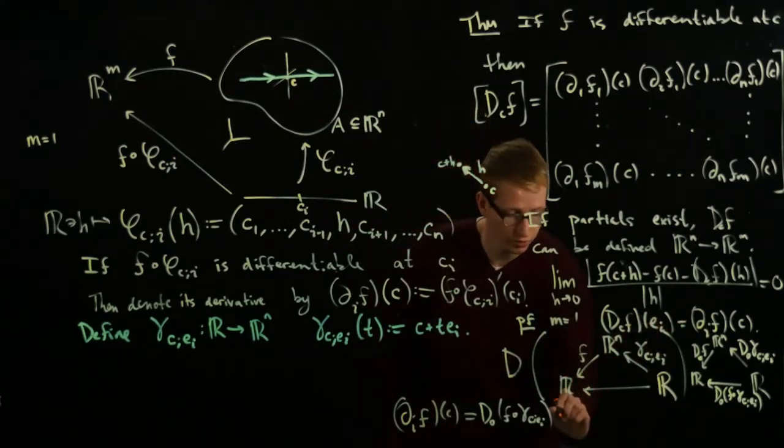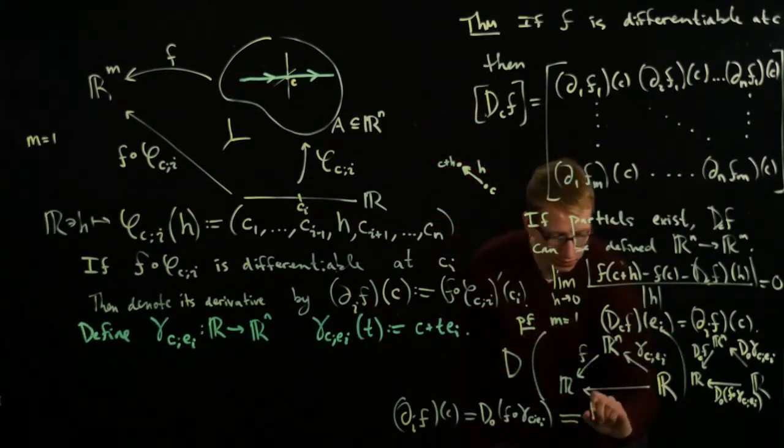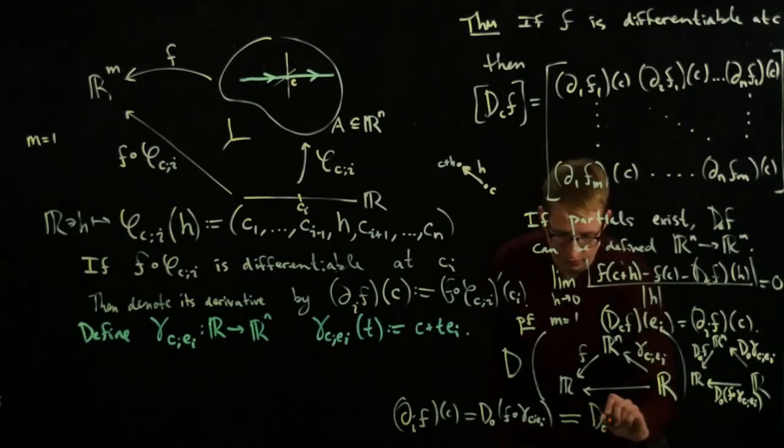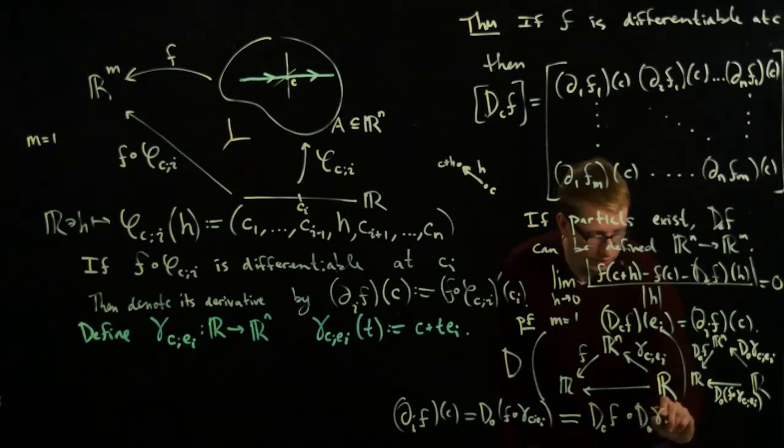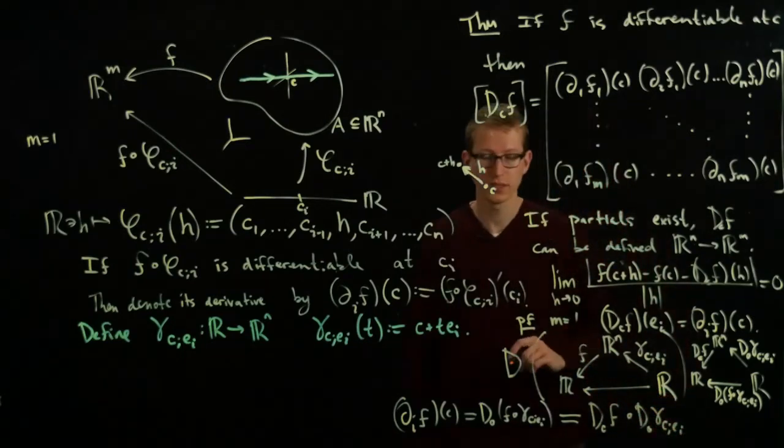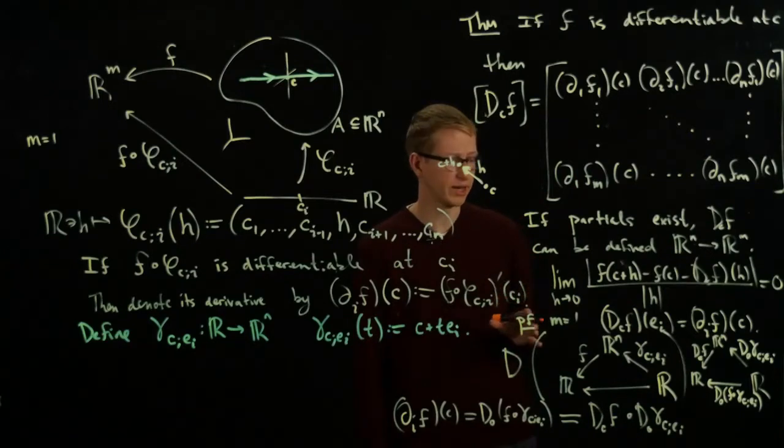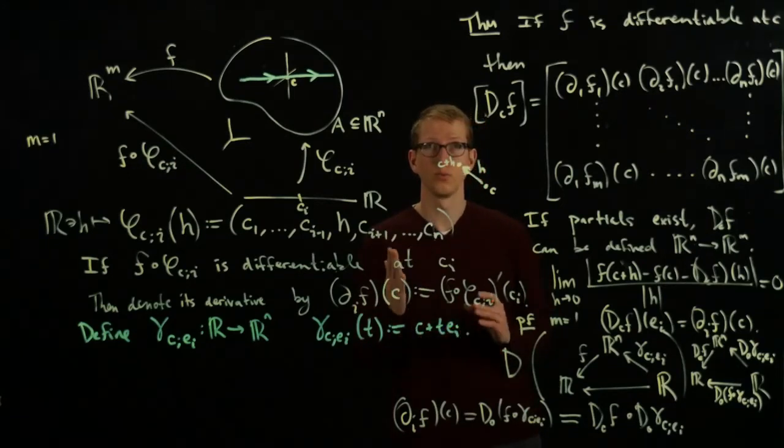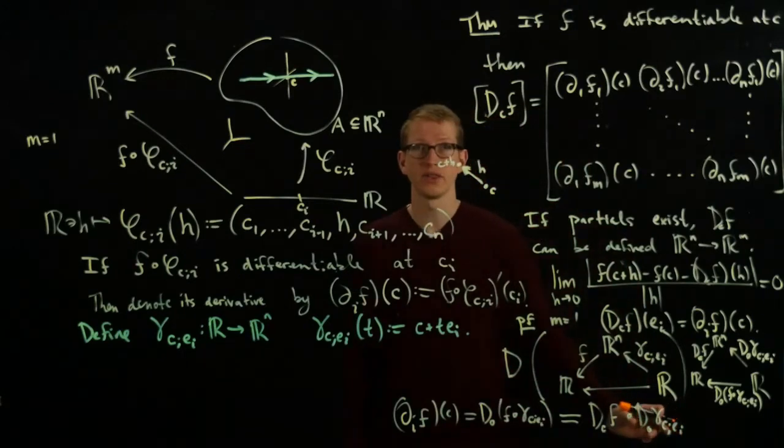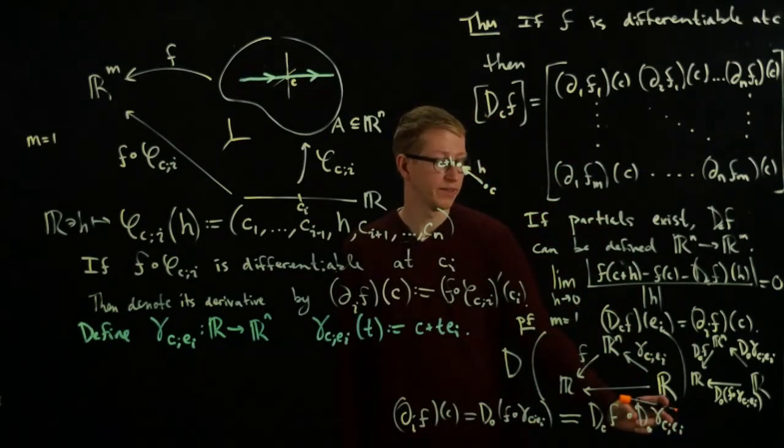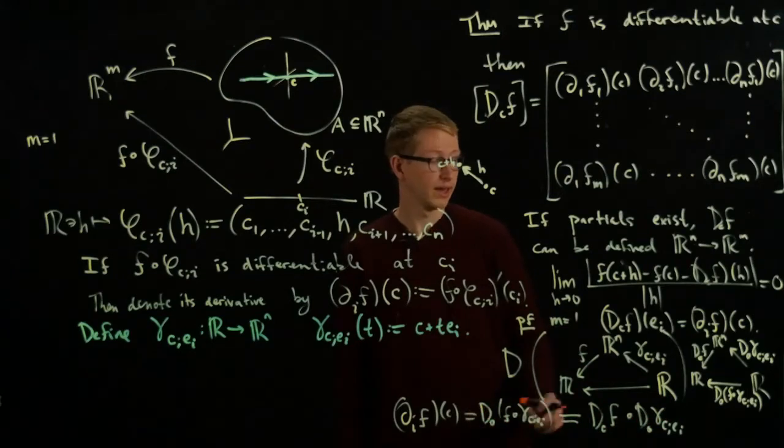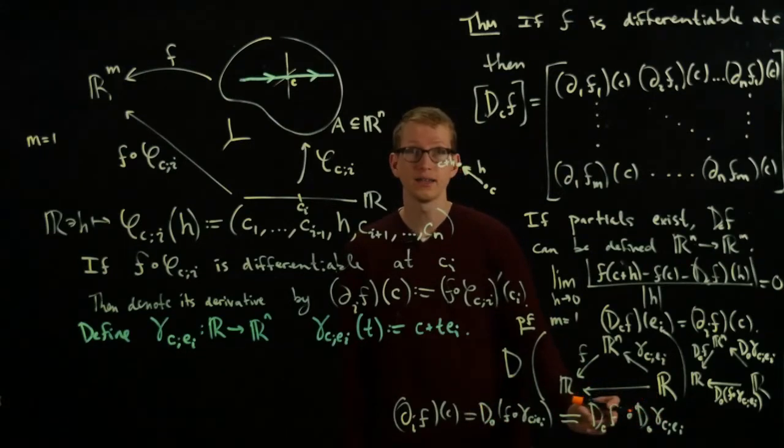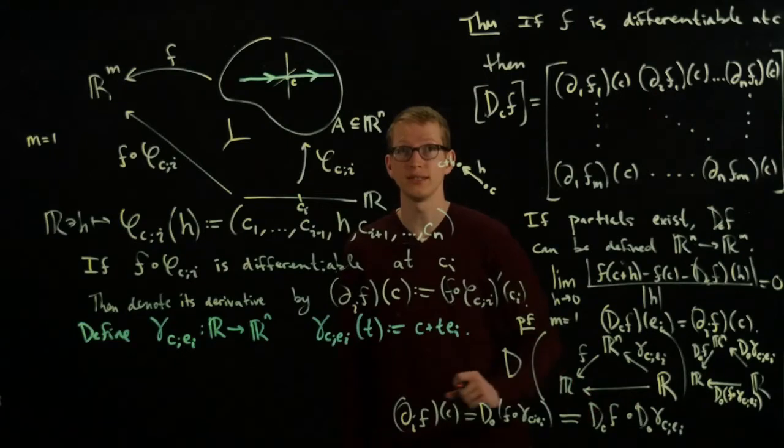What we have here is that this is equal to the i-th partial derivative of F at C by definition of the partial derivative. Then using the chain rule, we get that this equals D_C F composed with D_0 γ_C,e_i. Let's check by plugging in a vector what this gives us.